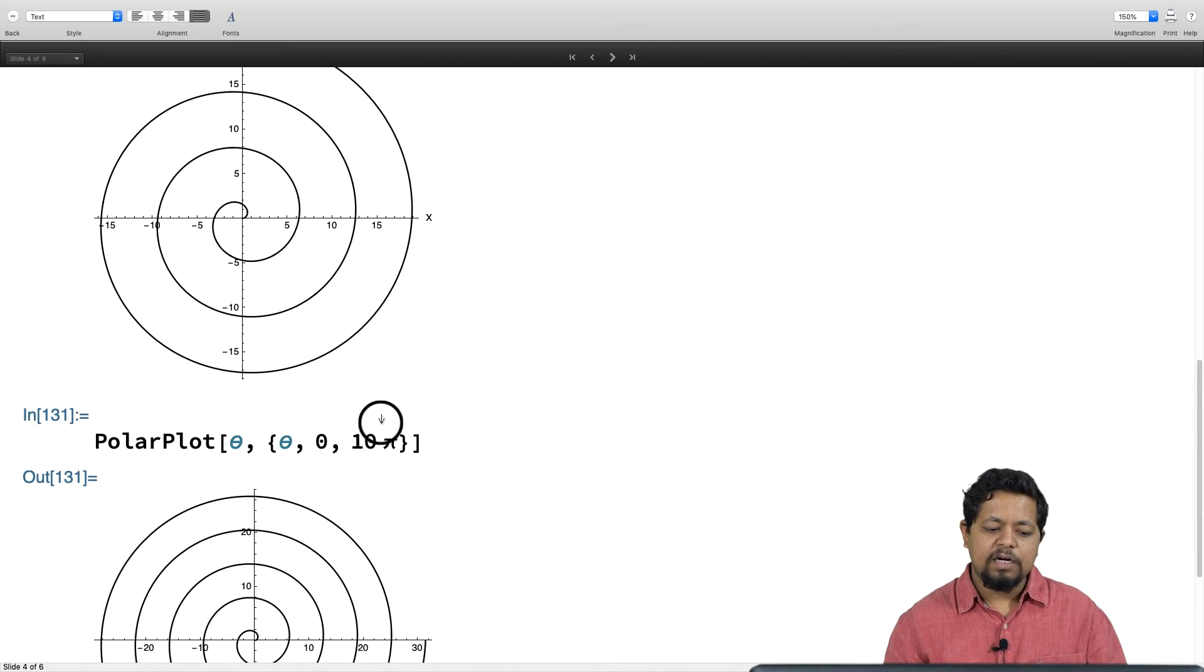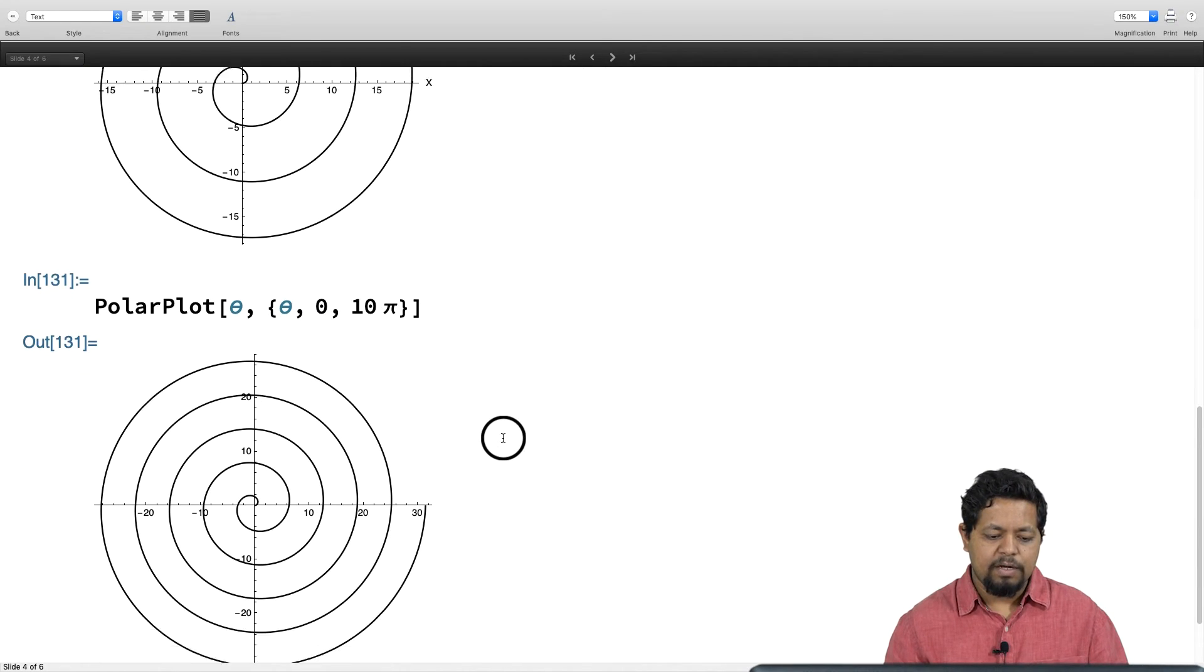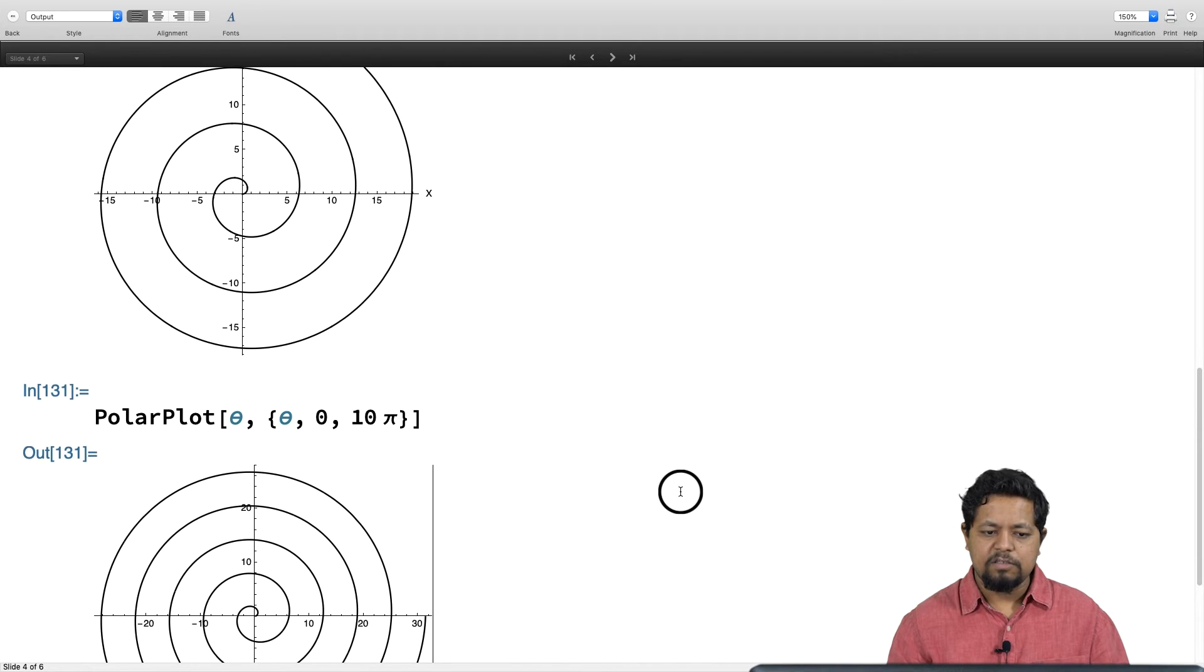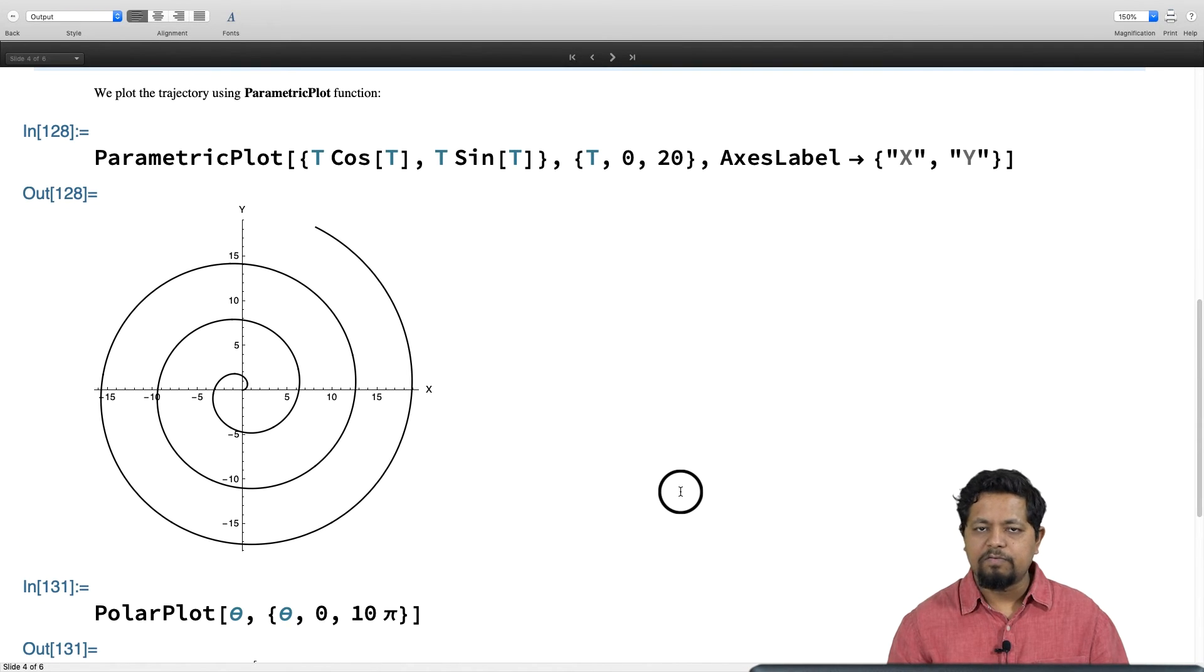Here we used directly the polar plot function to make a plot using polar coordinates, where you have to specify the first argument as r as a function of theta and provide a range for theta.